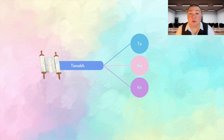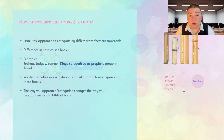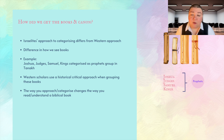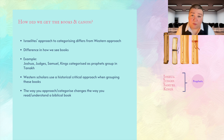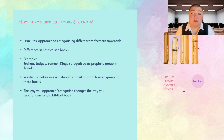The Israelites' approach to categorizing the various books differs, in part, from how we would in a Western approach. For example, Joshua, Judges, Samuel, and Kings are categorized in the Tanakh as being in the Prophets group. In contrast, Western scholars use a historical-critical approach when grouping these books. And of course, the way you approach changes the way that you read a biblical book.